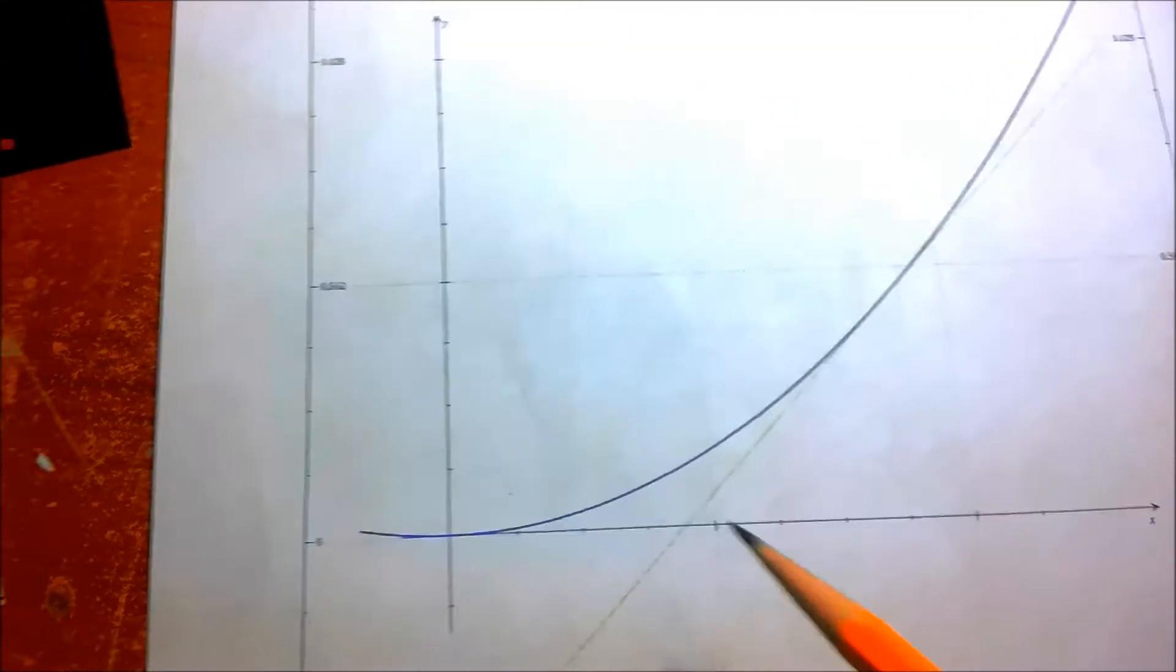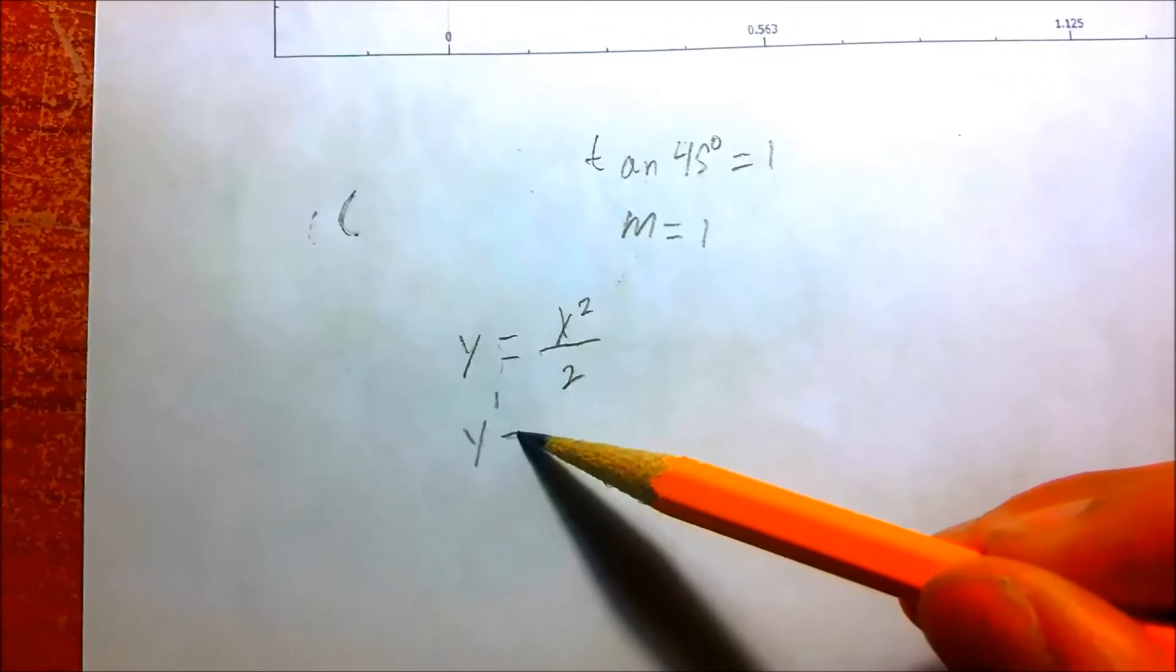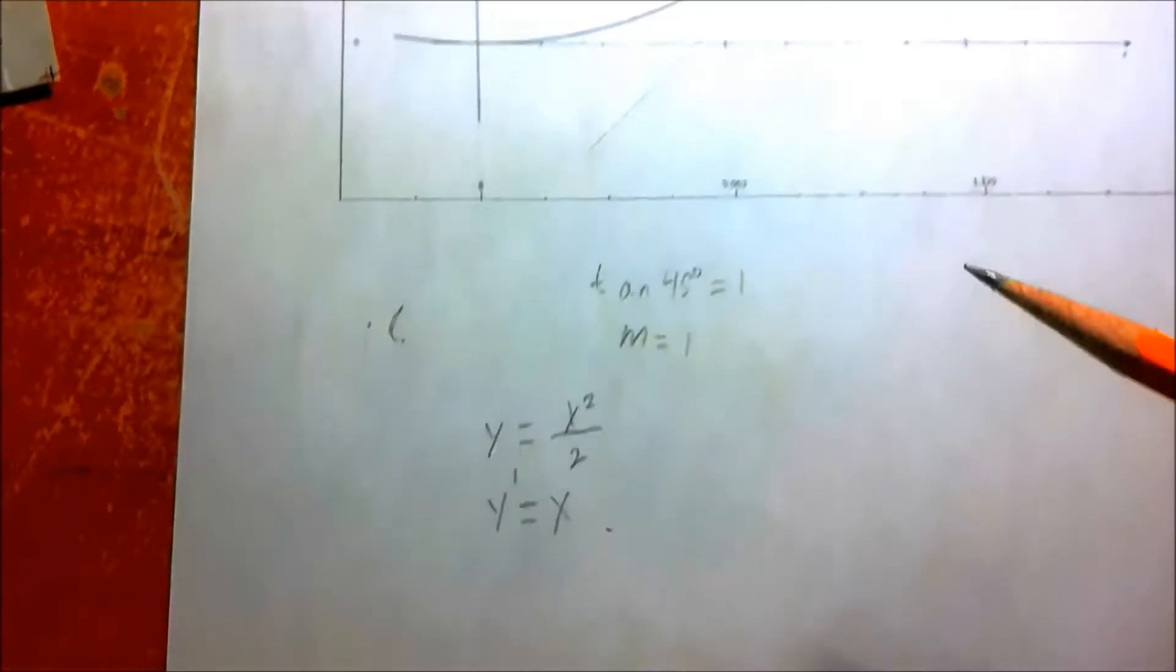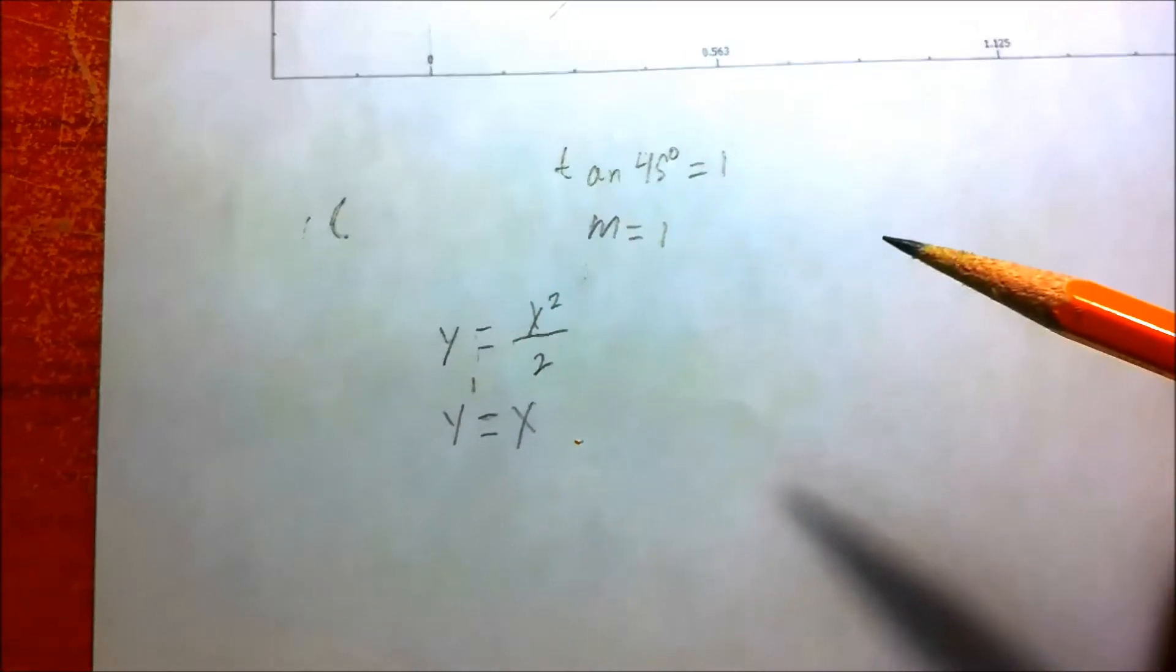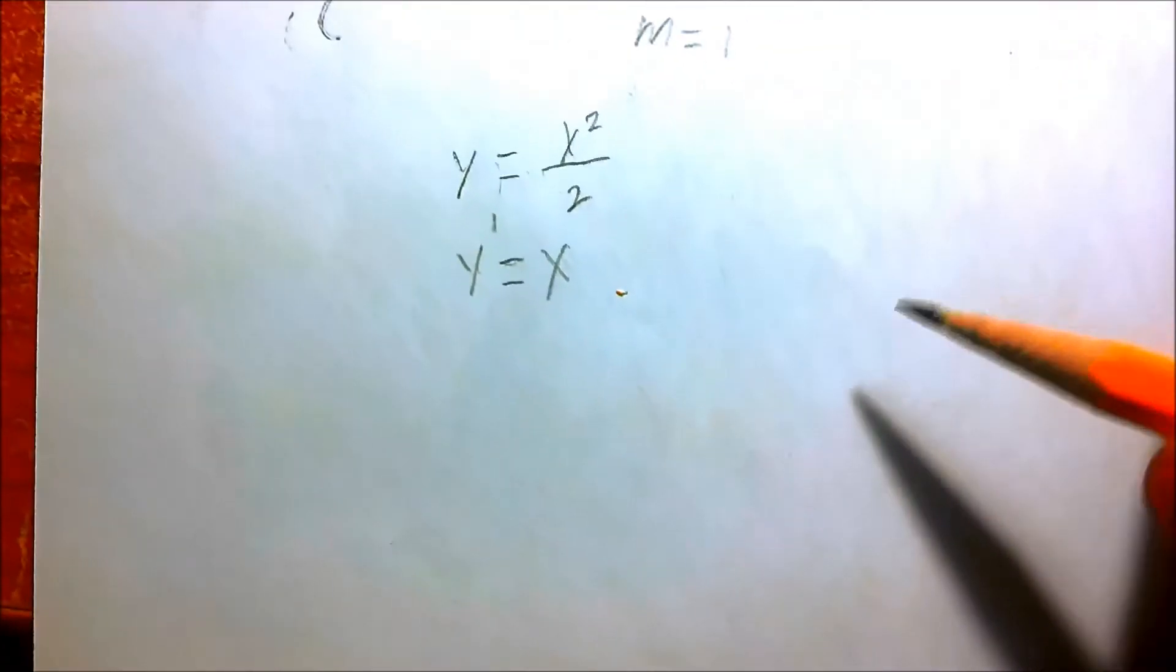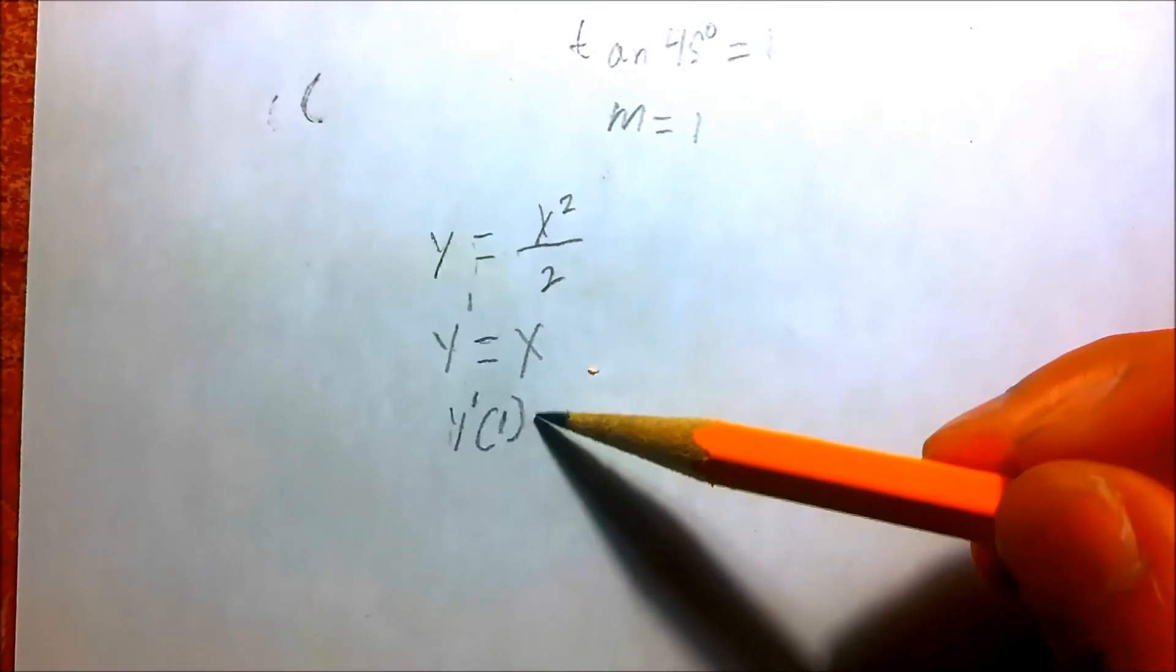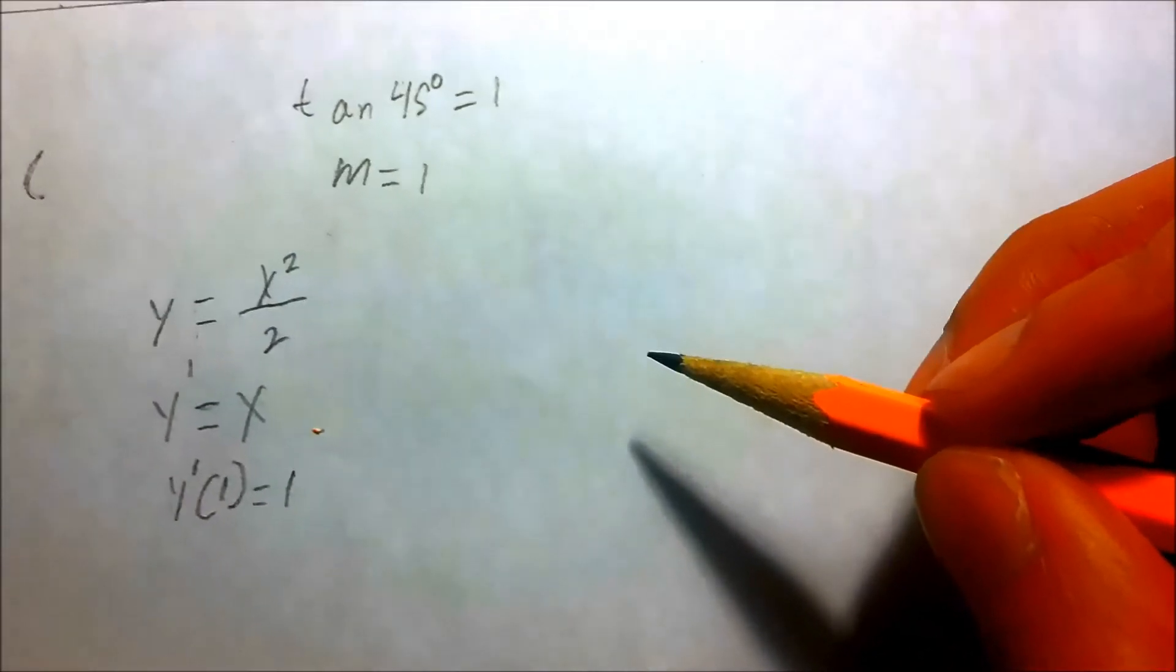So we can easily verify this using calculus. What we have here is y equals x squared divided by 2. That's the graph that we have up there in the blue. So we take the derivative. So we say y prime is equal to x. So the slope at any x is that value. So we chose x equals 1. And the slope at that point, y prime of 1 is equal to 1.